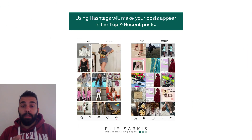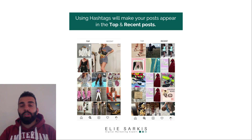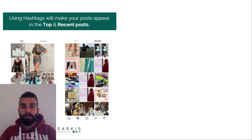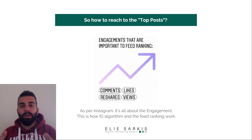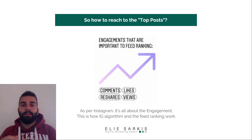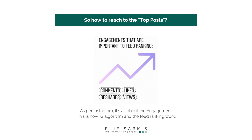Mainly we use hashtags to appear in the recent and top posts on Instagram, but our main focus should always be the top posts. When you appear in the recent posts, your post will be lost between thousands of other posts. The top results work based on the number of engagement we have — comments, likes, views, and reshares.